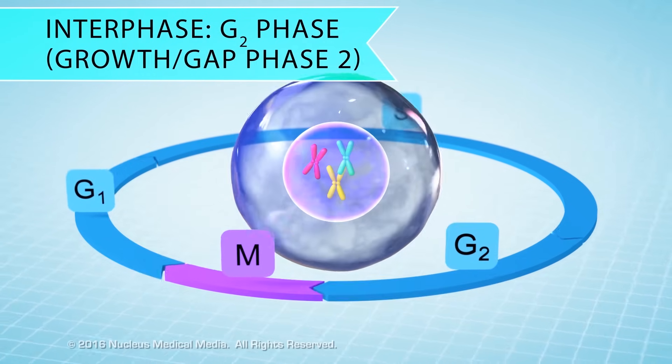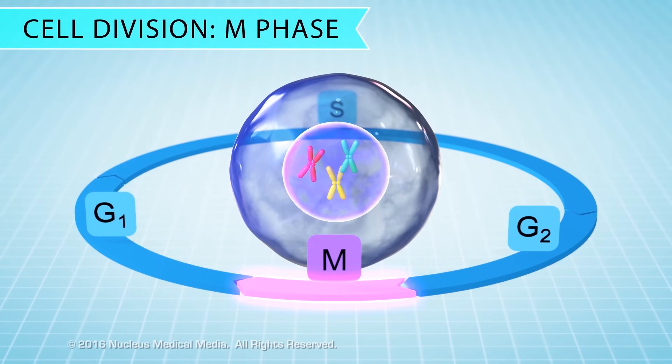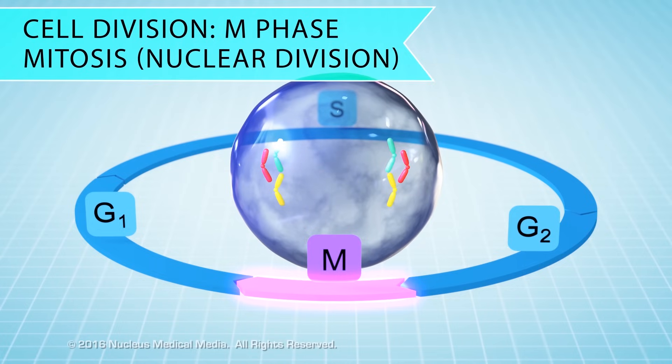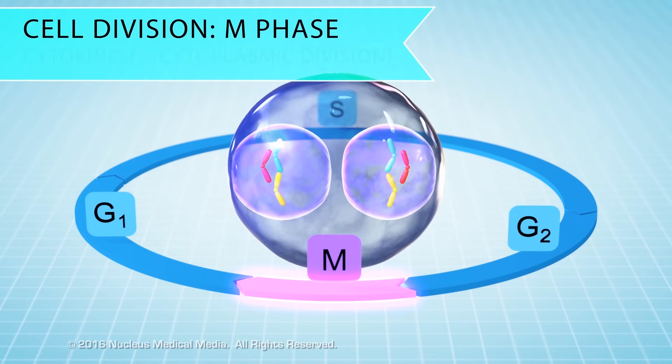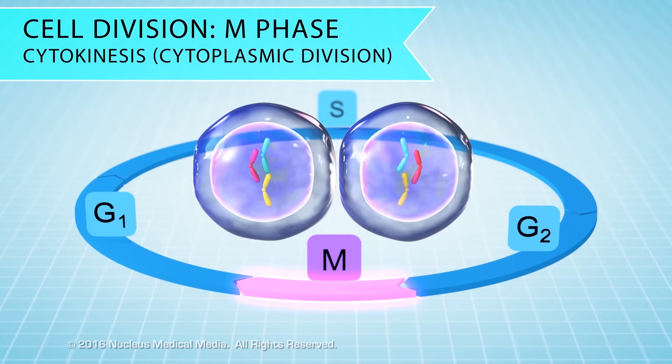Now that interphase is over, the cell is ready for cell division, which happens in the M phase. The M phase has two events. The main one is mitosis, which is division of the cell's nucleus, followed by cytokinesis, a division of the cytoplasm.